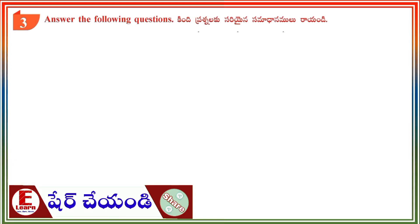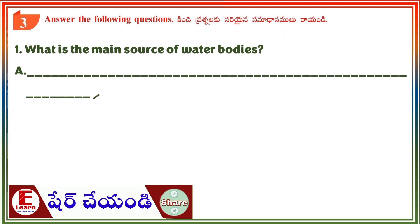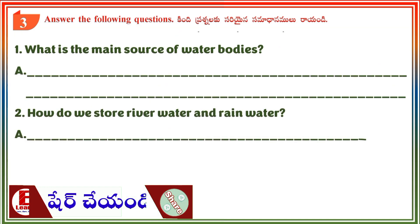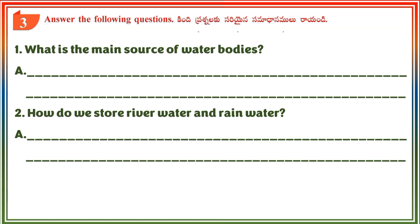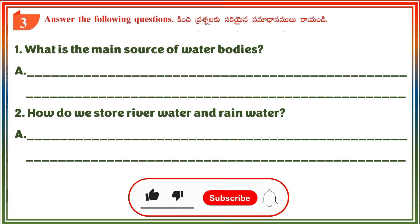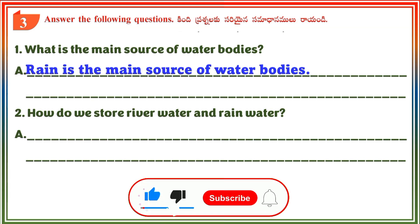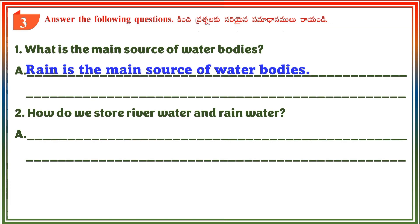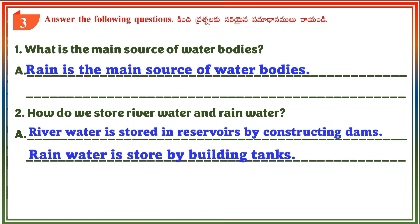Section 3: Answer the following questions. Question 1: What is the main source of water bodies? Answer: Rain is the main source of water bodies. Question 2: How do we store river water and rain water? Answer: River water is stored in reservoirs by constructing dams. Rain water is stored by building tanks.